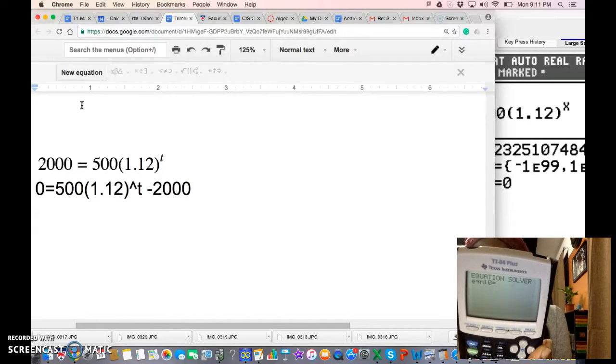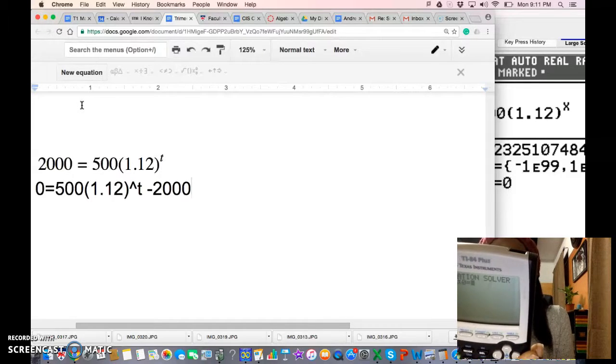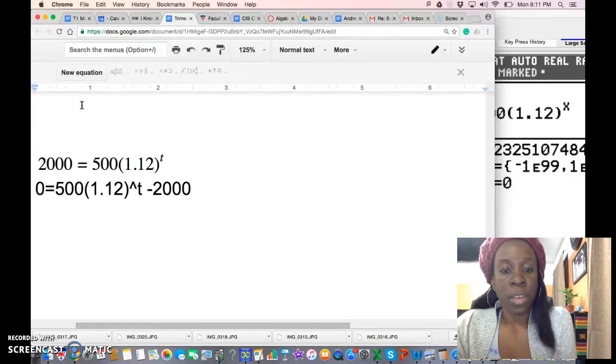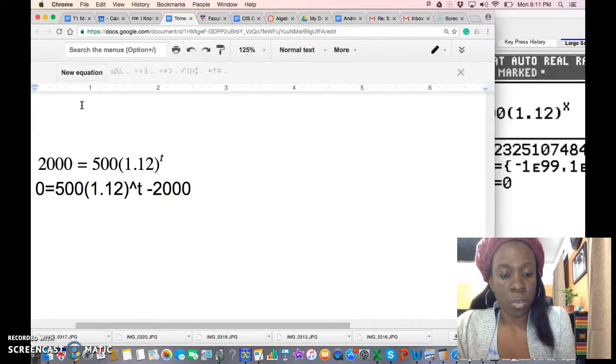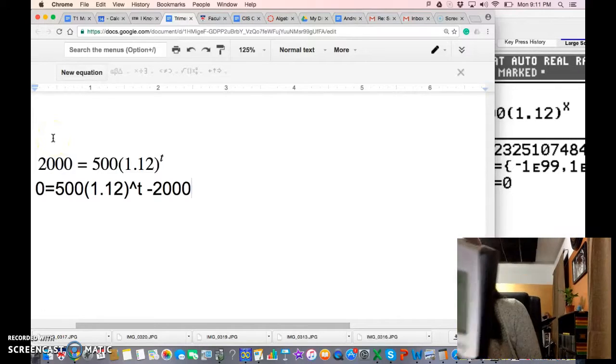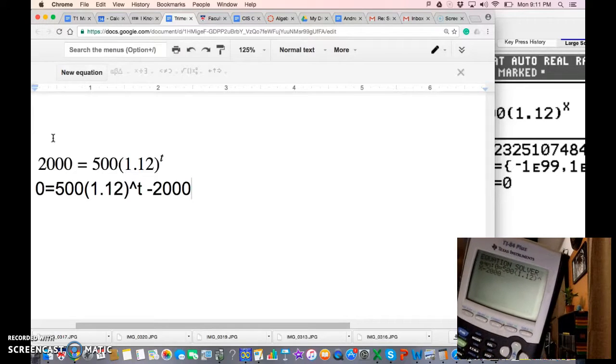Once you have an equation equal to zero, you can type it into the calculator and I'll go ahead and do that pretty quickly. 500 times, you can do it while I'm doing it as well, raised to the x minus two thousand. So here we have the equation. That's what your equation should look like if you have the older calculator.